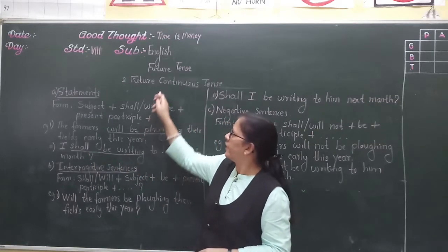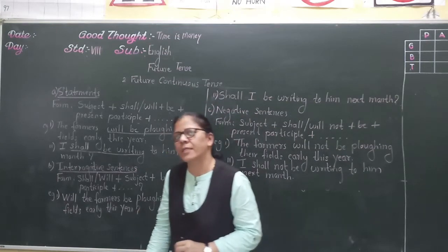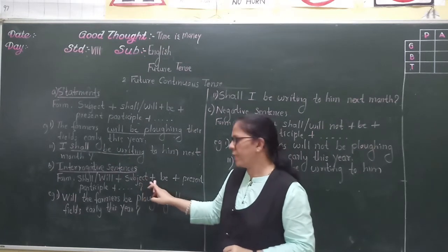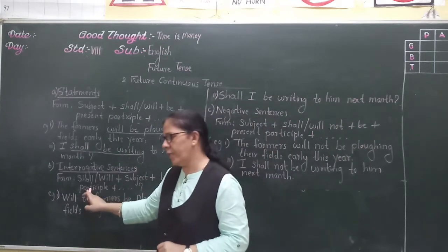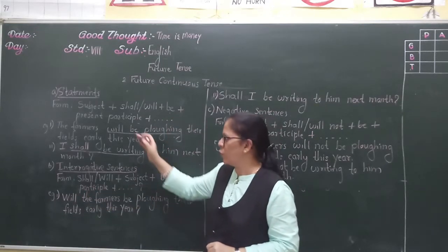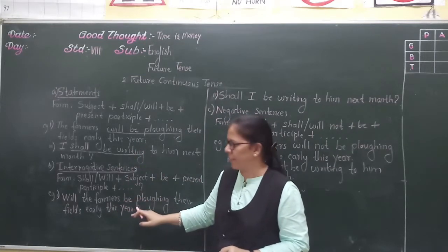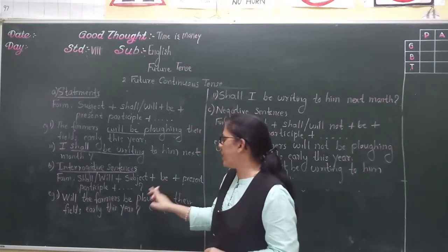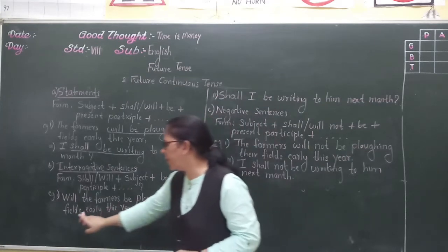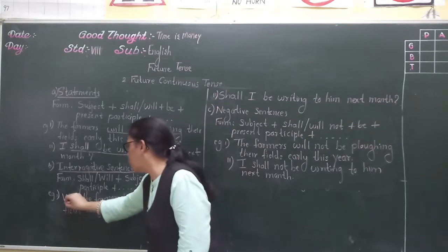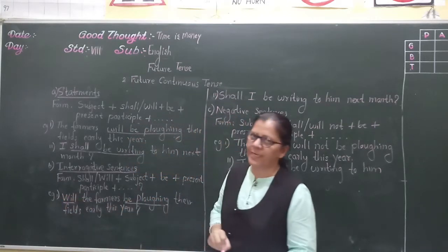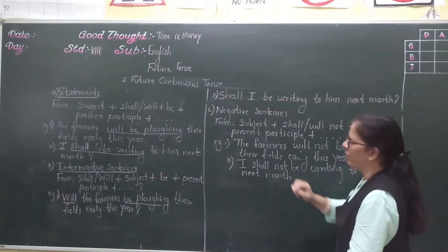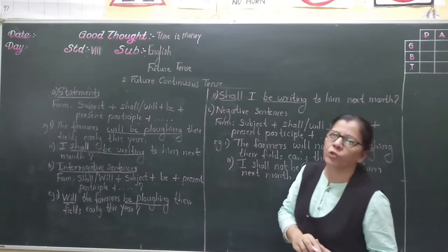'Shall be writing' indicates future continuous tense. Now let us see the form of future continuous tense in interrogative sentences. The form is: shall or will plus subject plus be plus present participle, that is -ing form of verb, plus remaining part of sentence. For example: 'Will the farmers be plowing their fields early this year?' Second example: 'Shall I be writing to him next month?' — 'shall be writing' indicates future continuous tense.